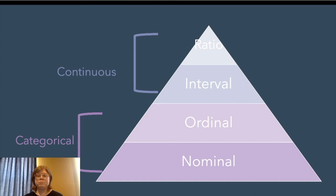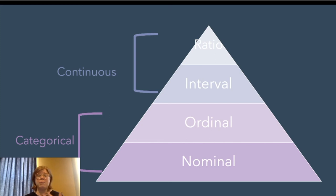What we can't do with ordinal measures is say that the distance between those categories is the same. People spend varying amounts of time at each level — two years for an associate's degree, three years for early graduation, or eight years for a bachelor's degree. We can't say there's a measurable equal distance between each category. That's what an interval variable is — the next level up from ordinal.